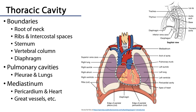The heart is found within the thoracic cavity, and the thoracic cavity is the space which is bounded laterally by the ribs and the intercostal spaces, superiorly by the root of the neck — which as it transitions into the thoracic cavity is above the level of rib one — inferiorly by the diaphragm, posteriorly by the vertebral column, and anteriorly by the sternum.